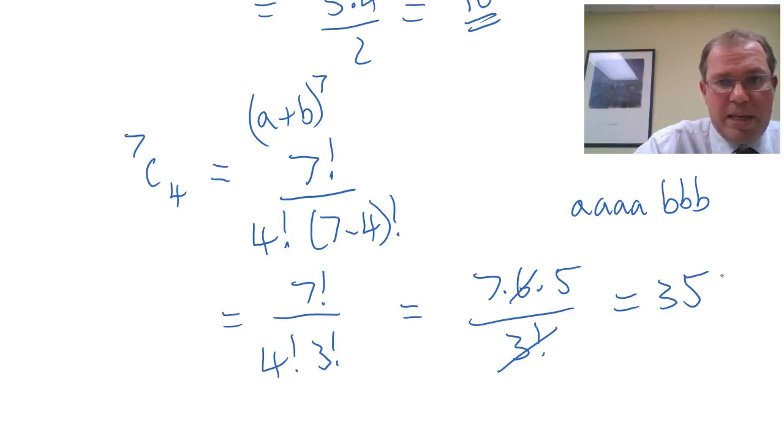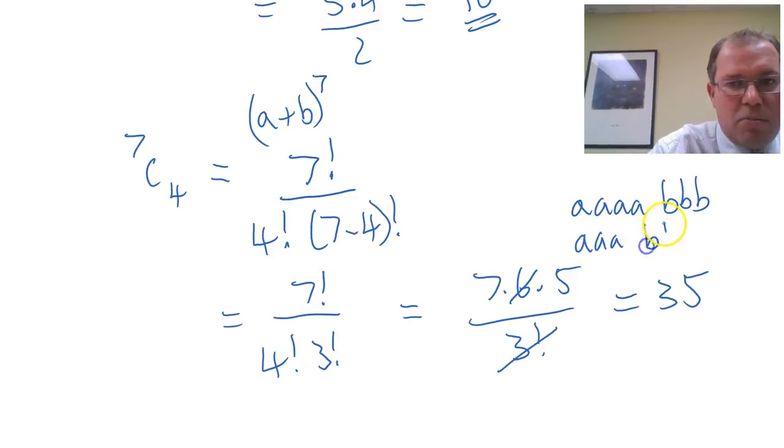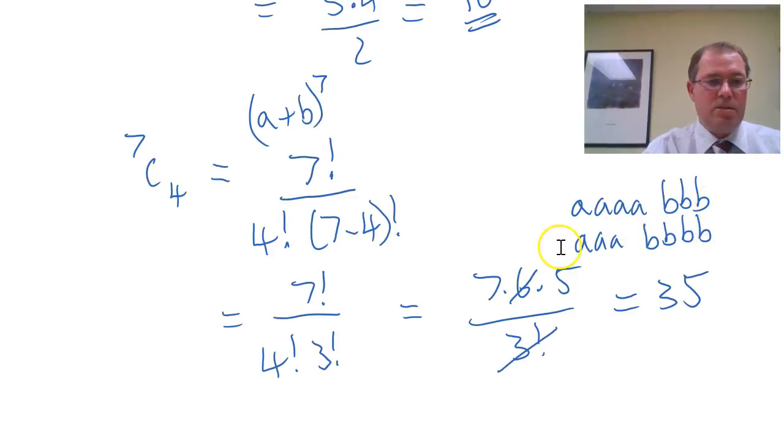Now, of course, the number of ways of arranging 4 a's and 3 b's is, of course, identical to 3 a's and 4 b's, which is why we have this symmetry in Pascal's triangle.